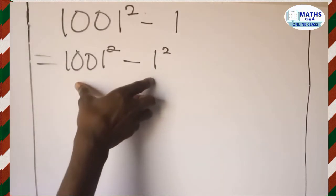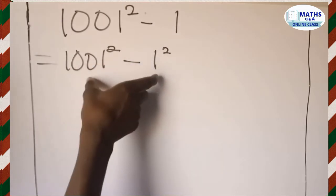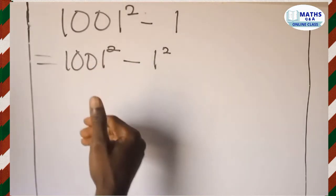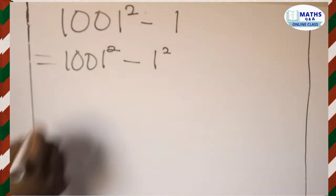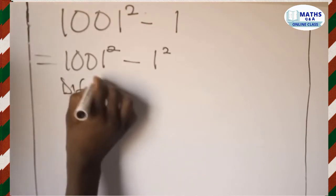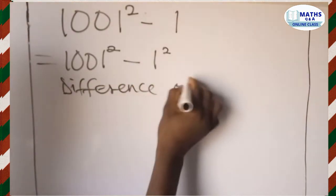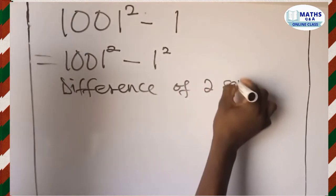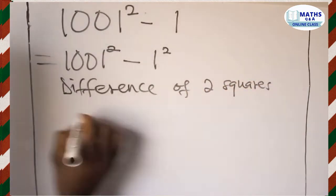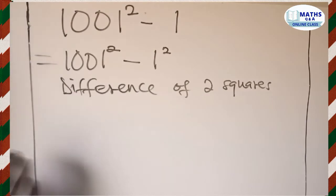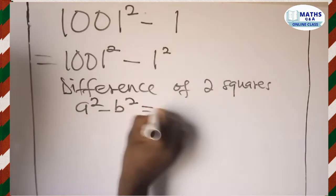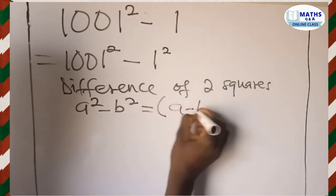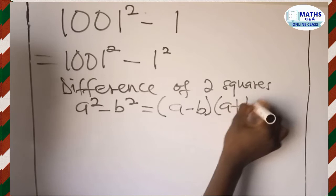We have to find the difference of these two square numbers. We are going to use the formula for difference of two squares. The formula says that whenever you have two square numbers, a squared minus b squared, you can write them as (a minus b) multiplied by (a plus b).